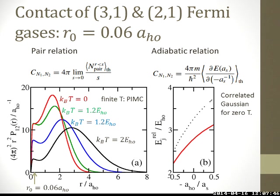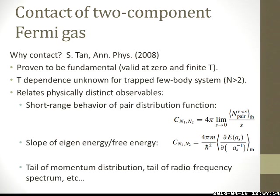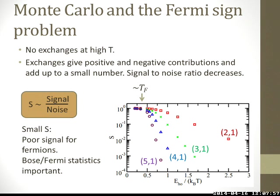The lowest temperature accessible with the path integral Monte Carlo for the 3-1 system is around 0.6 harmonic oscillator units. The signal-to-noise ratio shown characterizes how severe the Fermi-sign problem is — it is the signal-to-noise ratio caused by the Fermi sign. It means it is 10 to the 3 times harder than at high temperature, but by increasing simulation time or using supercomputers, one can go to a lower temperature.